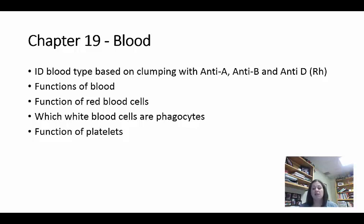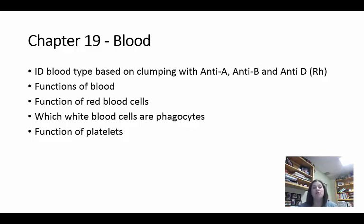White blood cells, also known as leukocytes, function in immunity and help protect us. Some white blood cells are phagocytes — like pac-man, they eat or consume the foreign invader or pathogen. The white blood cells that are phagocytes include neutrophils and monocytes, which also grow and mature into macrophages. Platelets, also known as thrombocytes, help with blood clotting to prevent bleeding. Whenever there's a tear in a vessel or tissue damage, platelets create a clot and close up the wound to stop bleeding.